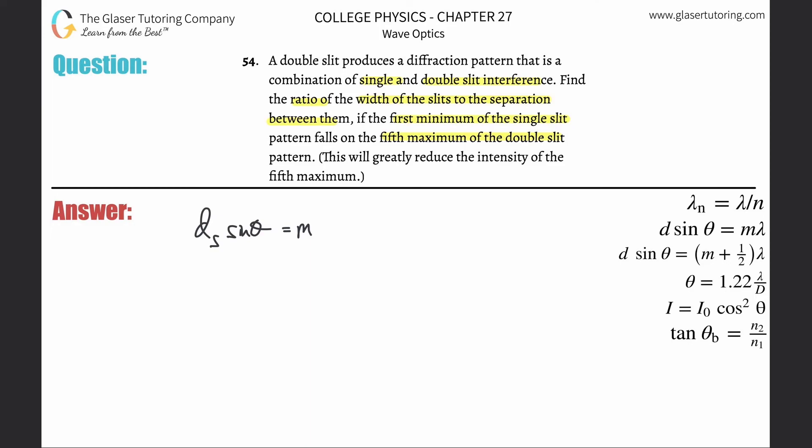In this case, it's going to be for the single slit. They said it's a first order minimum for the single, so that's fine, times lambda, the wavelength of the light entering the single slit.